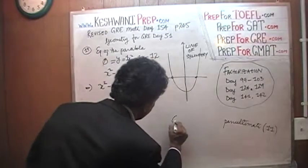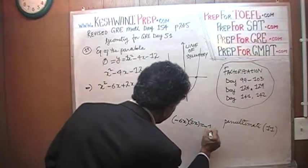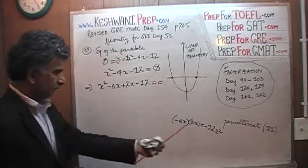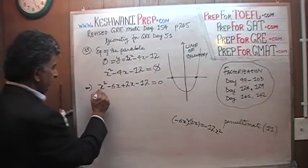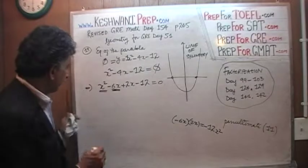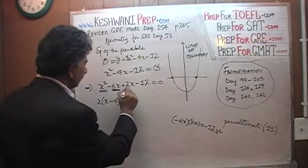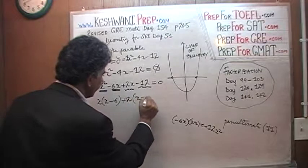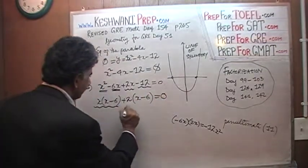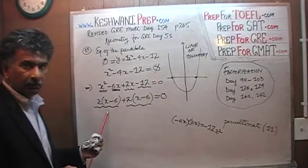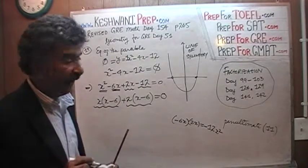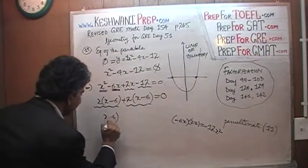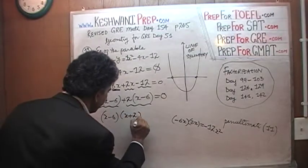And negative 6x times positive 2x gives us negative 12x squared, which matches our original term. Now, looking at the first two terms, the common factor is x — take out x. For the last two terms, positive 2x and negative 12 have a common factor of 2. That equals 0. Now the common factor in both groups is x minus 6. So we get x minus 6, times x plus 2, equals 0.